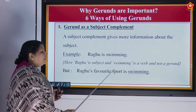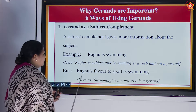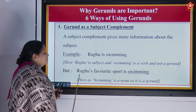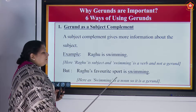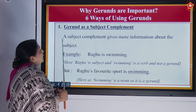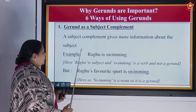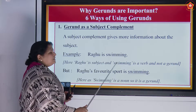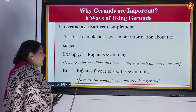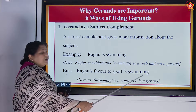But consider: Raghu's favorite sport is swimming. When swimming follows 'is' in this way, it acts as a noun. So it is a gerund. In the sentence 'Raghu is swimming,' swimming is a verb. In 'Raghu's favorite sport is swimming,' swimming acts as a noun and is therefore a gerund.